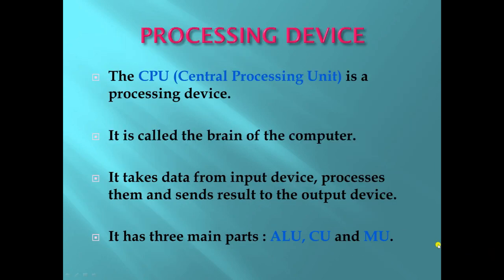Next is the processing device. The CPU, or central processing unit, is a processing device. It is also called the brain of the computer. It takes data from the input device, processes it, and sends the result to the output device. It has three main parts: ALU, CU, and MU.